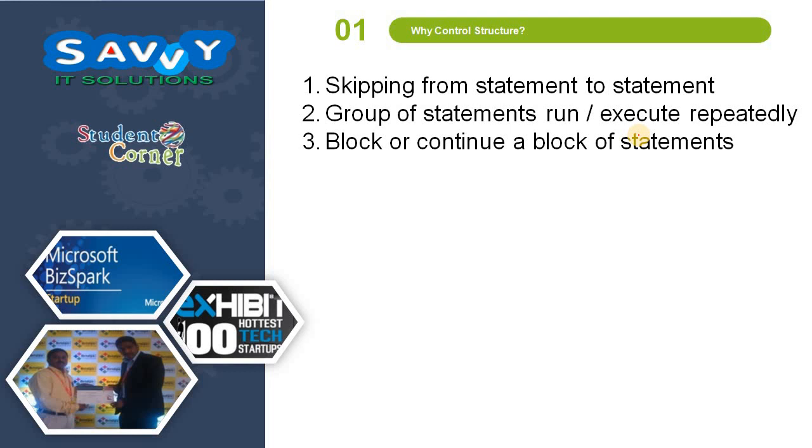So why control structures? In traditional programming before introducing control structures, programs are executed in a sequential way. But here a problem occurred. We cannot skip statements - for example, after statement 1, 2, 3, 4, if after 2 I need to execute 4.